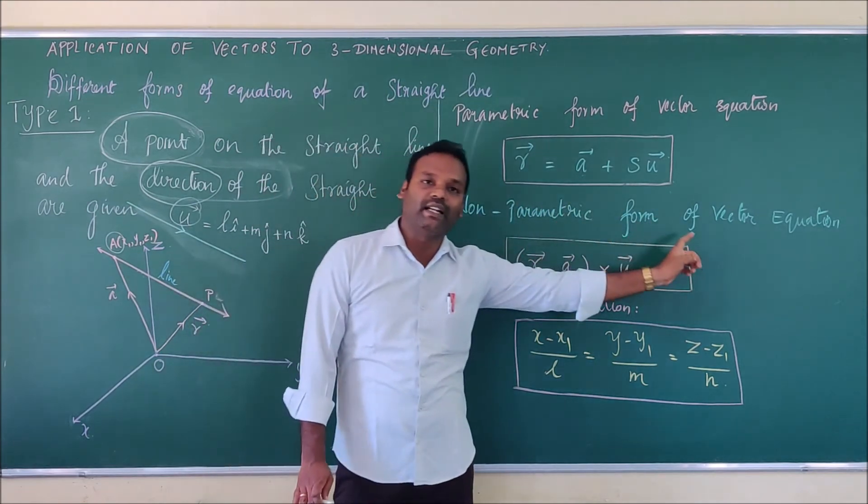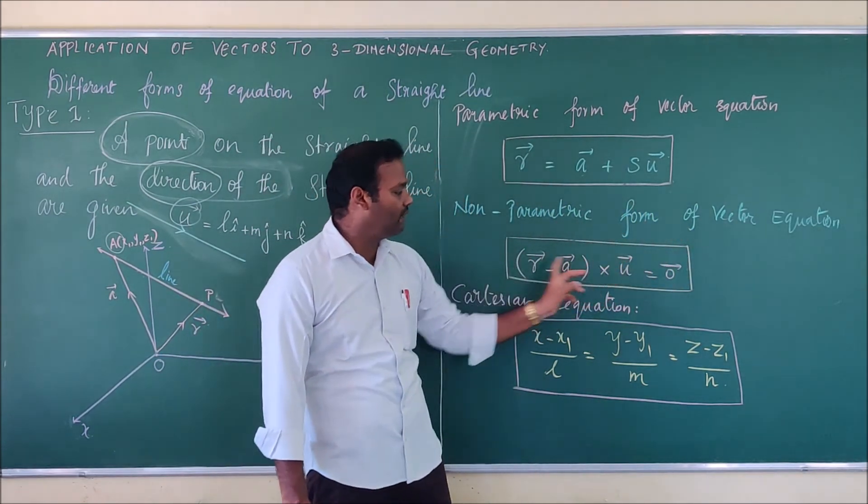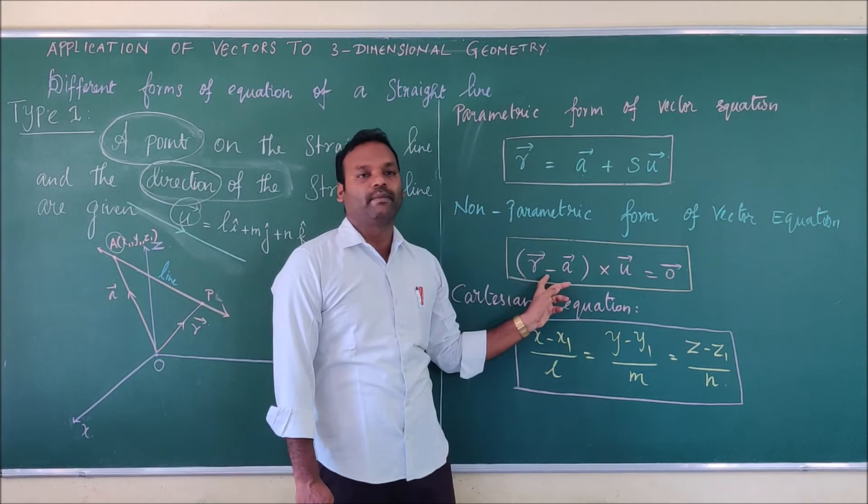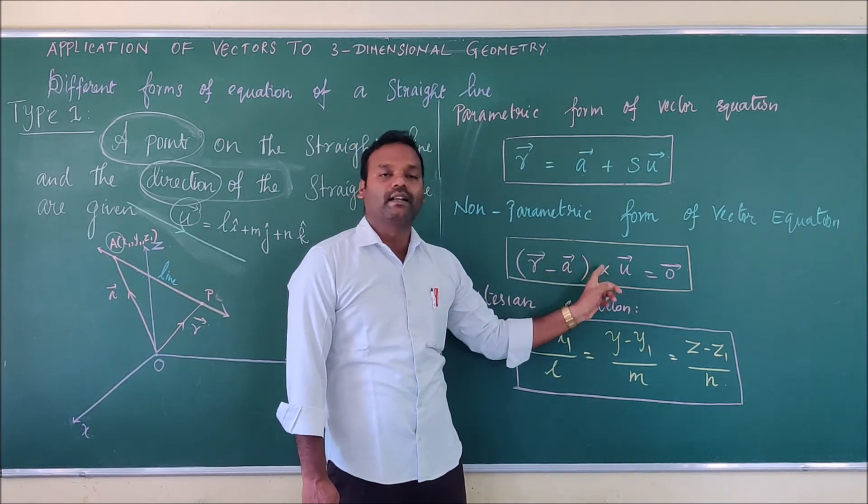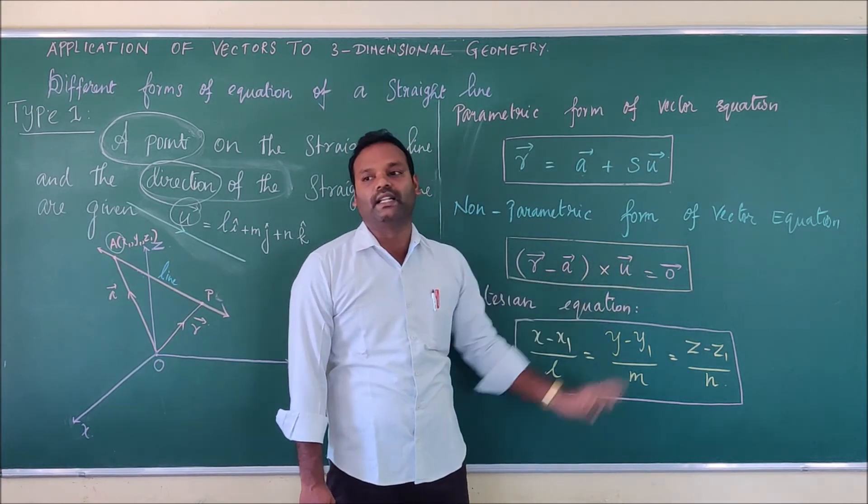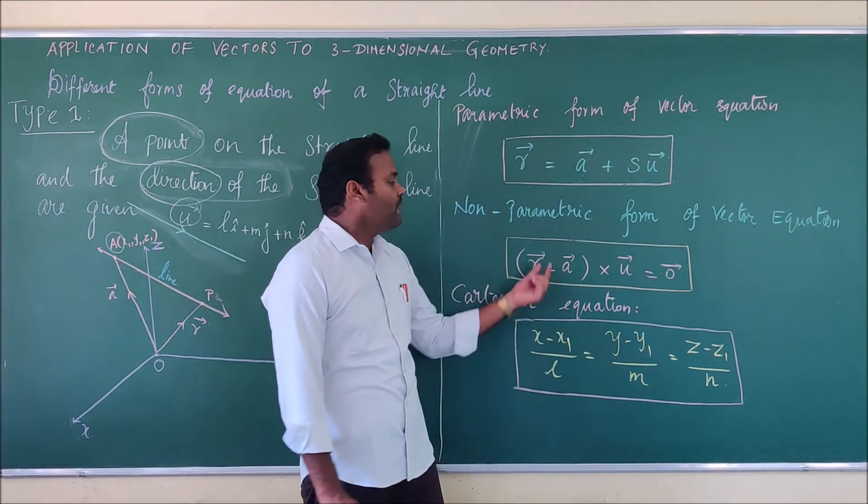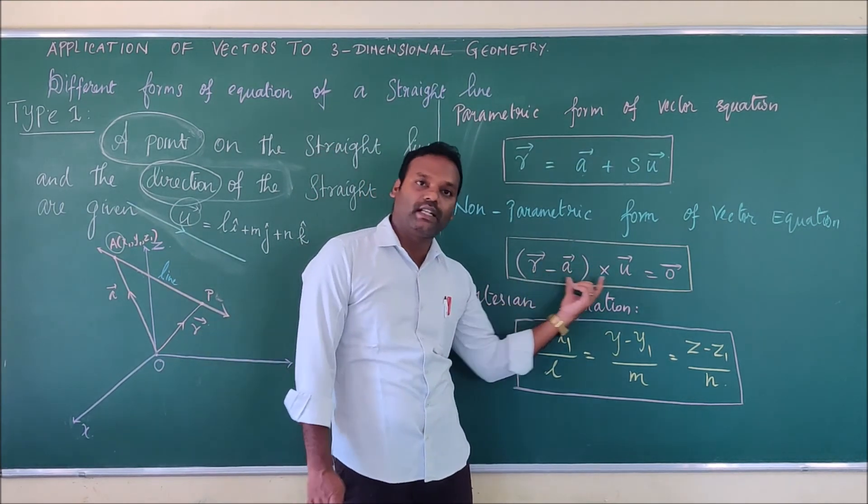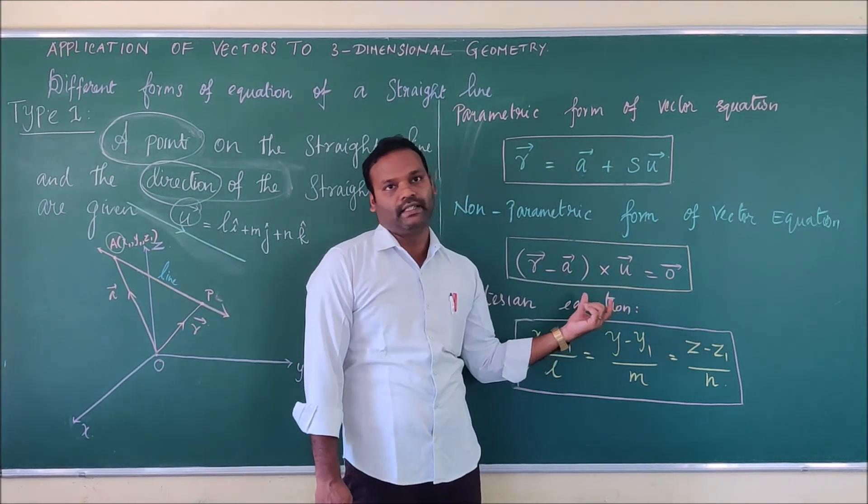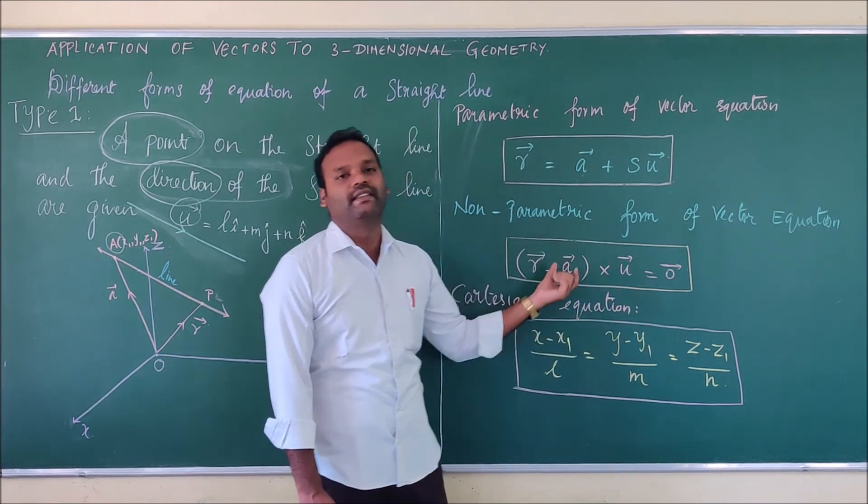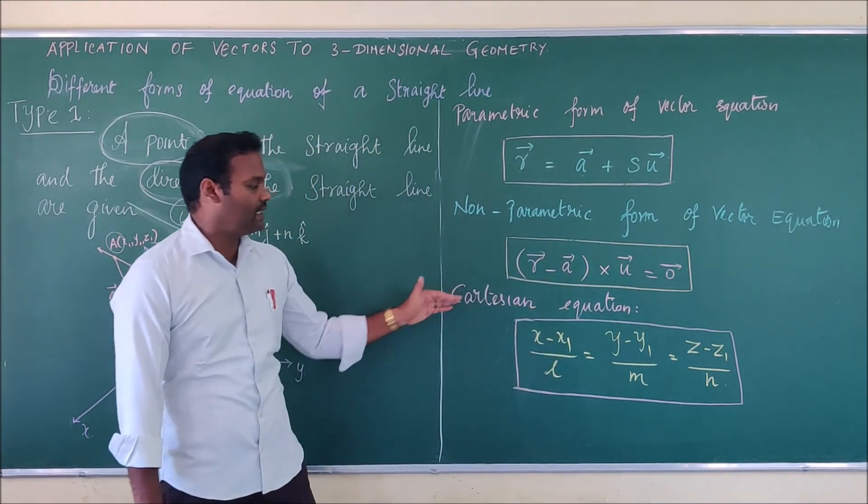Next, non-parametric form of vector equation. What is the formula? r vector minus a vector cross u vector equal to zero vector in which you are not at all having any parameter. That is constant. So, this is non-parametric vector equation.